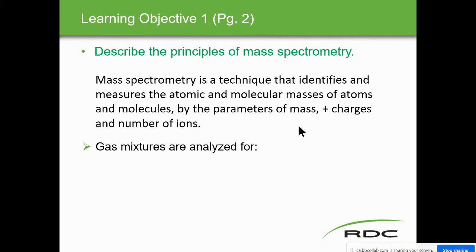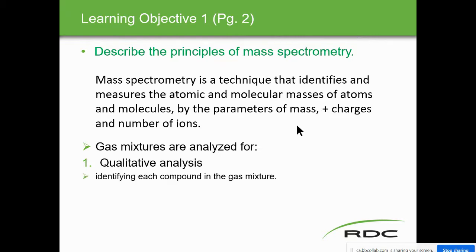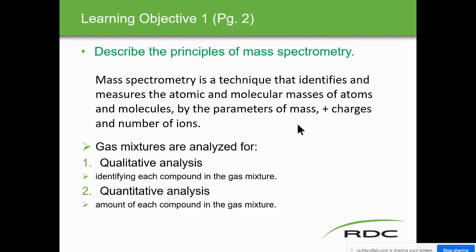The learning objectives are: one, describe the principles of mass spectrometry, and two, describe the application of mass spectrometry. Learning objective one — describe the principles of mass spectrometry — it's a technique that identifies and measures atomic and molecular masses of atoms.